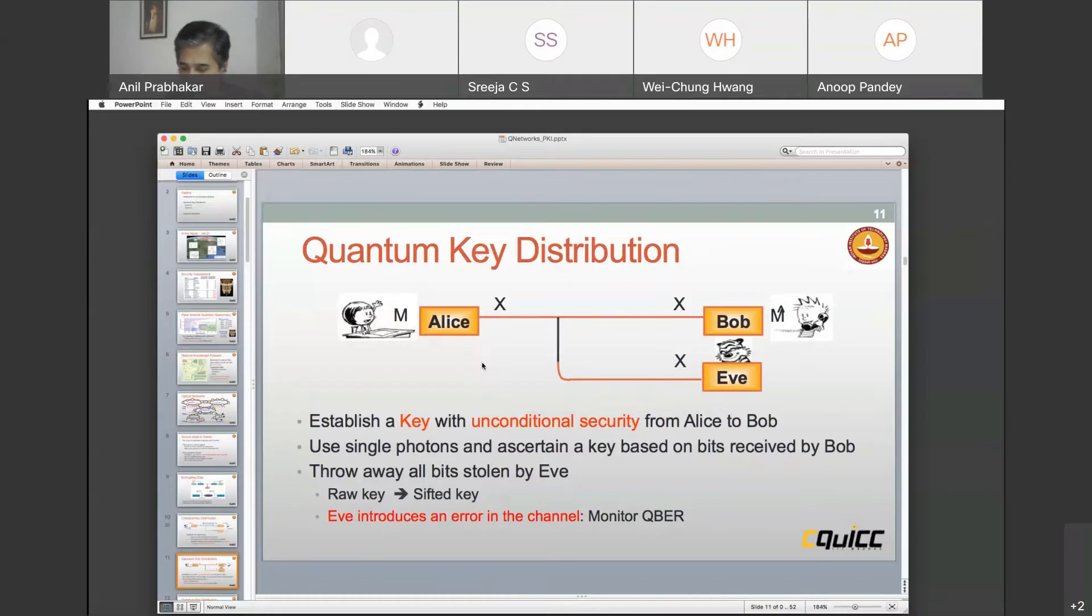Imagine a scenario where Alice sends a thousand bits as her key. It's a thousand bit secret word. The eavesdropper gets 900 of them. I can still set up a hundred bit key between Alice and Bob. My password of a hundred bits is still secure because Eve does not have them and she cannot clone them. She cannot make a copy of the hundred bits that Alice and Bob are using.